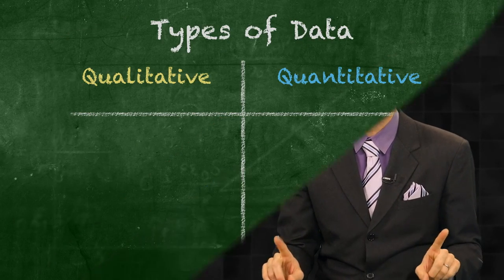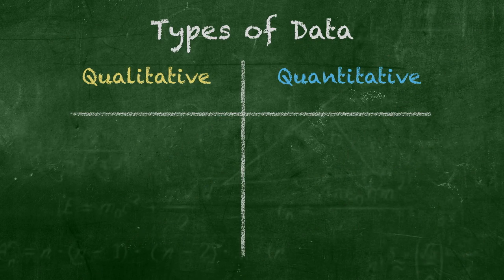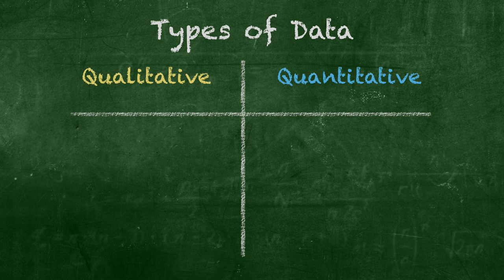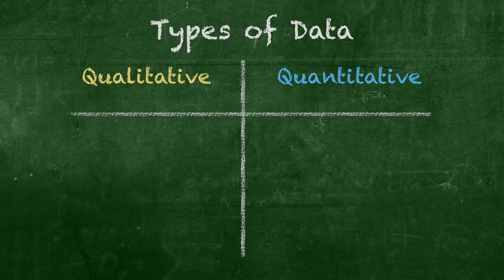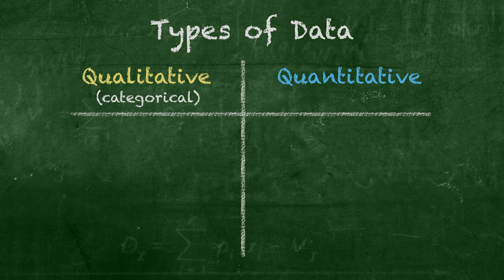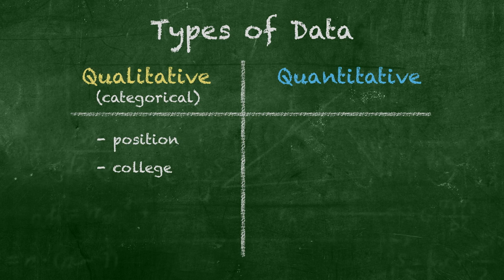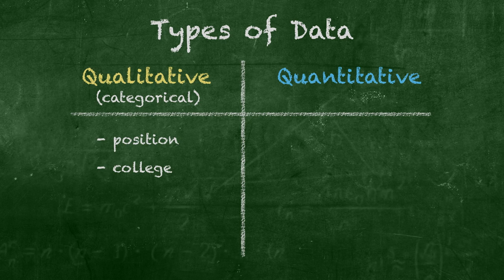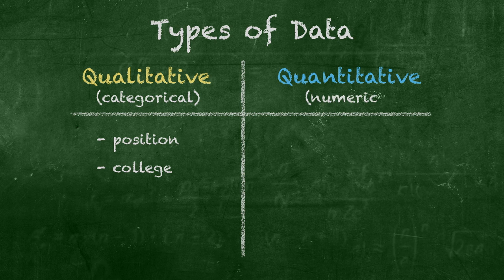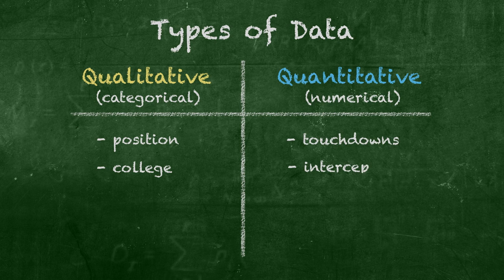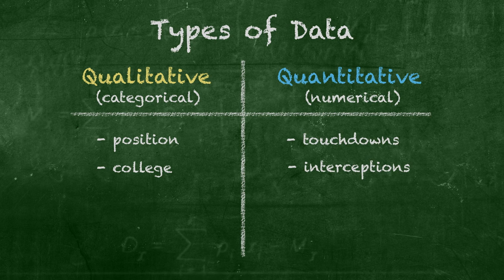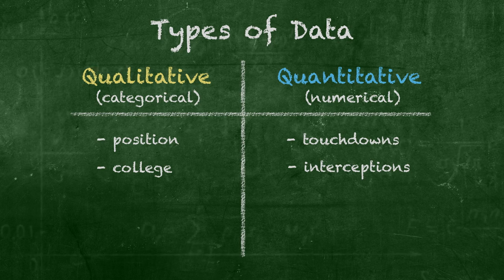Now, we've already discussed the difference between qualitative and quantitative data. To refresh: with qualitative data, we're asking ourselves, can the data be arranged into categories, like a playing position or the college the person attended? And with quantitative data, we're asking, are the data numerical, like touchdowns or interceptions? Peyton, start us off with qualitative data.